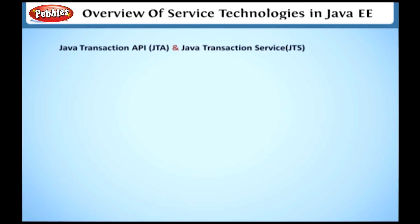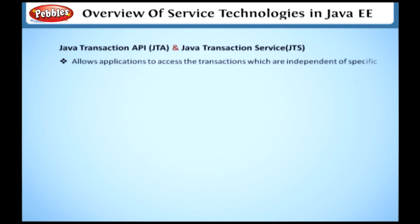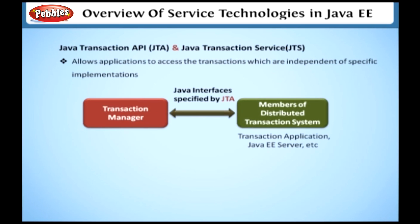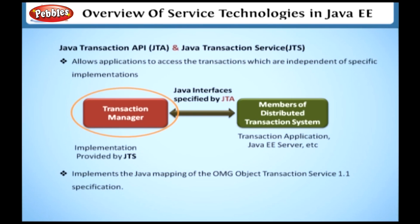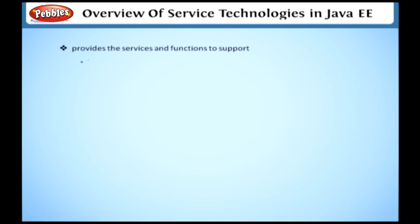Java Transaction API and Service. Java Transaction API, or JTA, allows applications to access transactions which are independent of specific implementations. JTA specifies standard Java interfaces between a transaction manager and the members in a distributed transaction system, i.e., the transactional application, the Java EE server, etc. The Java Transaction Service, or JTS, specifies the implementation of a transaction manager that supports JTA and implements the Java mapping of the Object Management Group Object Transaction Service 1.1 specification. The JTS Transaction Manager provides the services and management functions required for transaction isolation, transactional resource management, and more.